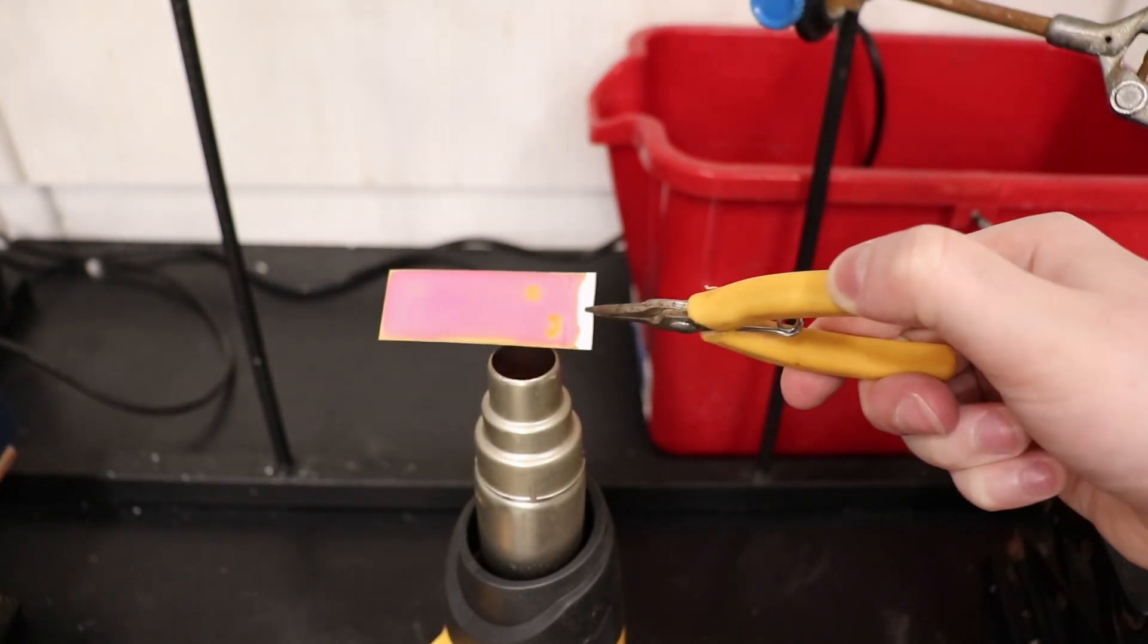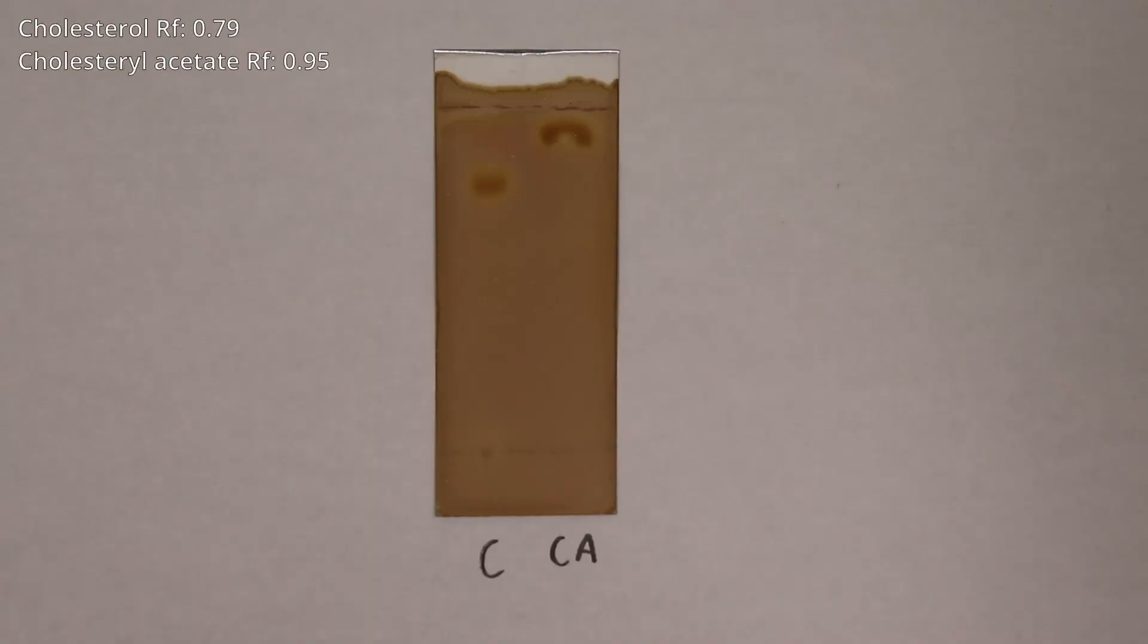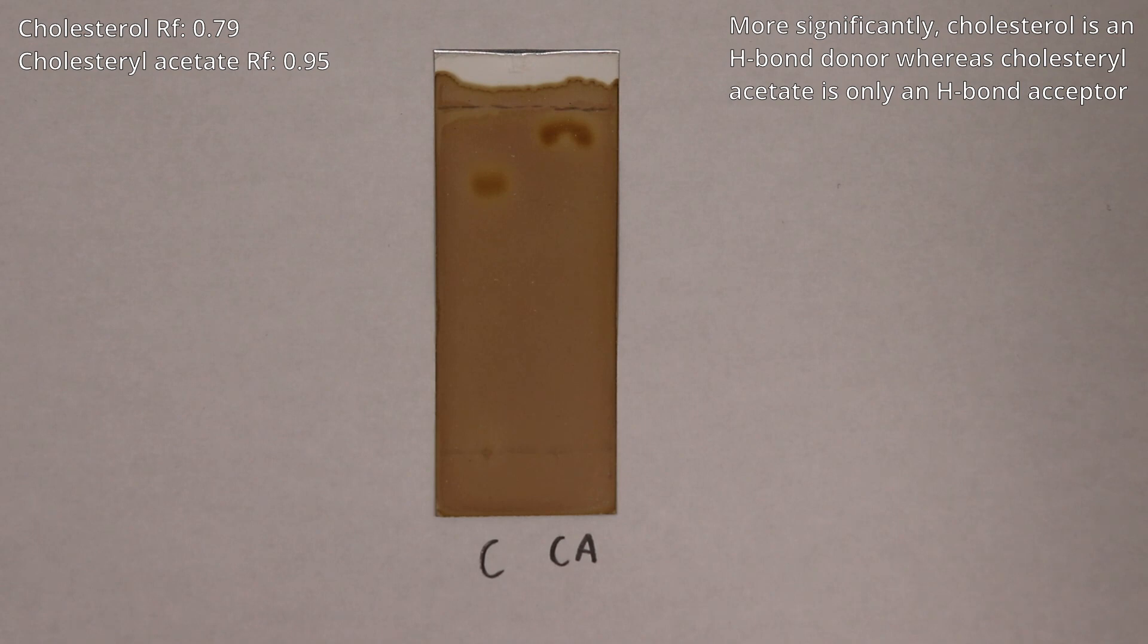You can see that the cholesterol acetate has a higher RF value than the cholesterol, which makes sense since the polar alcohol group in the cholesterol was replaced with the less polar ester group. And based on this TLC, there is no visible starting cholesterol in the product.